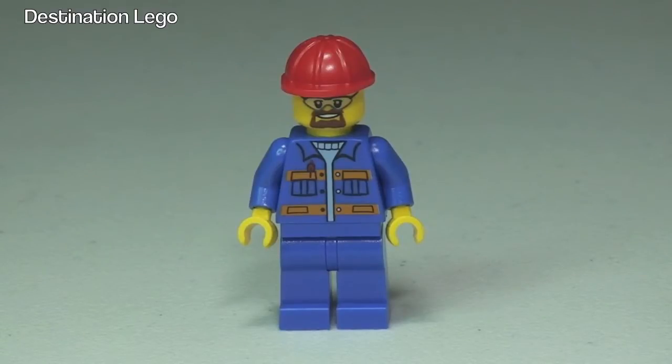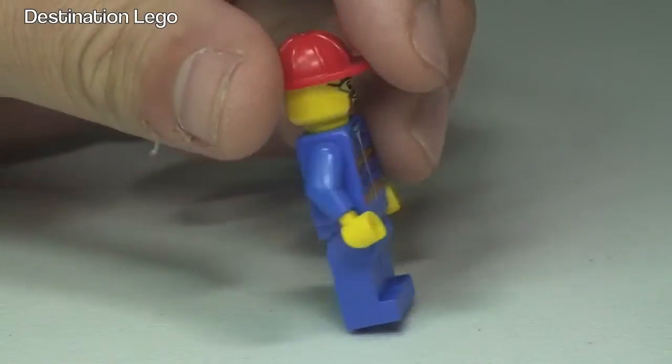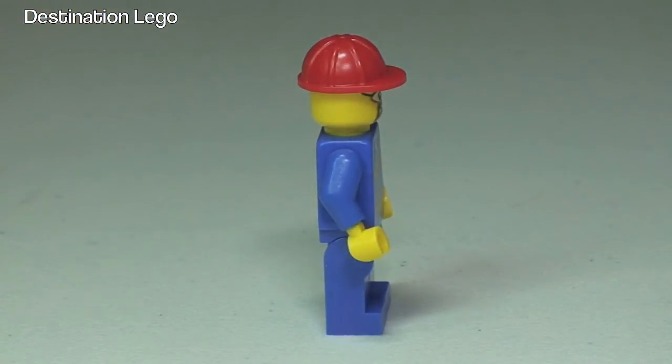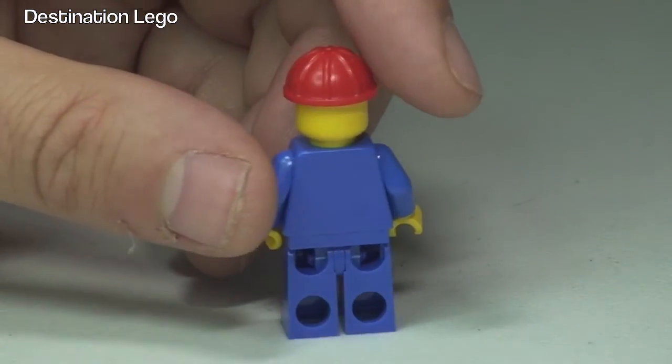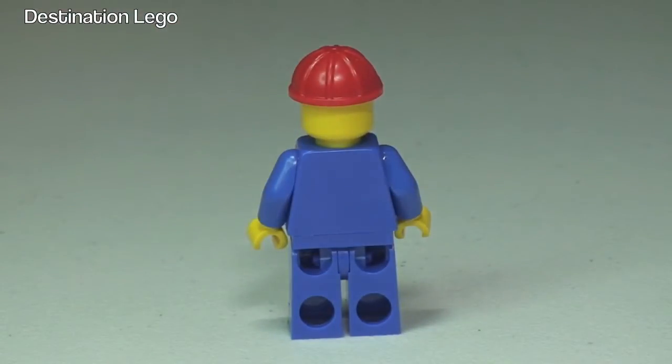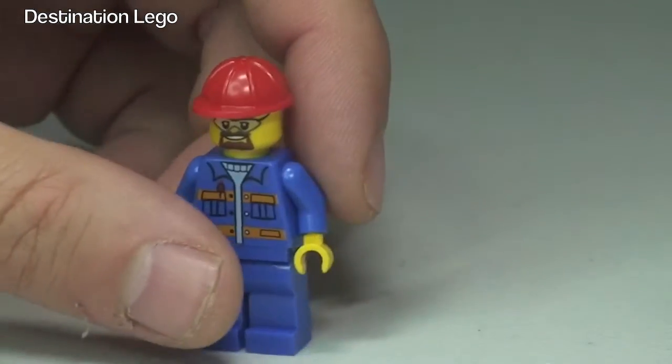So here is the minifigure that comes with the set. He has front torso print in there, the work jacket. If we spin him around, get a look at that side here, he comes with the red safety helmet. You can see there, there is no rear torso print and it is a single sided face print.